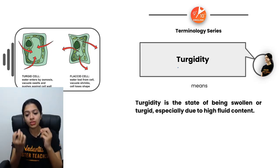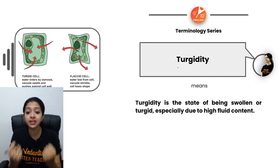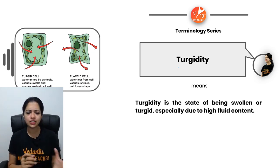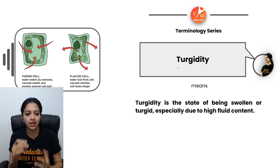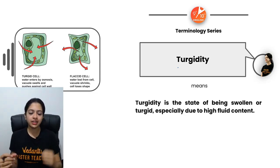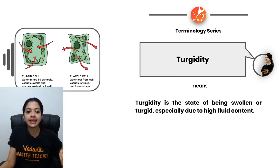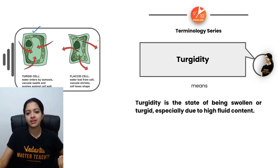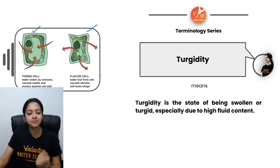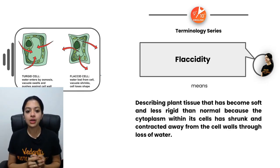Turgidity describes the state of a cell wherein it is swollen or rigid. In a plant cell this occurs due to high fluid content inside — lots of cell sap gives structure to the plant cell, making it appear turgid. By endosmosis, when water enters a cell, it becomes turgid. By exosmosis, when water is lost, it becomes flaccid or shrunken.